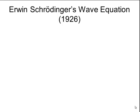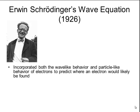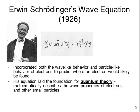In 1926, Erwin Schrödinger, an Austrian physicist, incorporated both the wave-like behavior and the particle-like behavior of electrons to predict where an electron would likely be found. In doing so, he created a mathematical equation that laid the foundation for quantum theory. You can see his equation right here. It incorporates a lot of complicated calculus, so we won't be using it in class, but I thought it would be neat to show you.